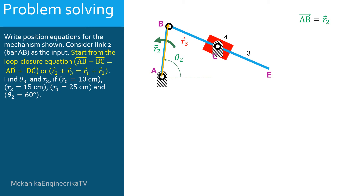The vector BC has a variable modulus and a variable angle. The modulus of the vector BC changes with the translation of link 3 relatively to the slider, and measures how far the bar BE has moved relatively to C. The angle of the vector BC measures the rotation angle of link 3. As the bar BE is translating along the slider, both link 3 and the slider have the same angle here. The vector BC is a good vector to represent the vector position of link 3, the bar BE.